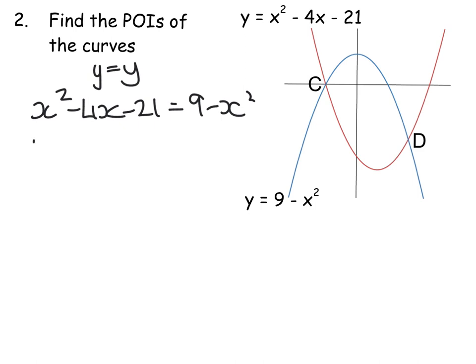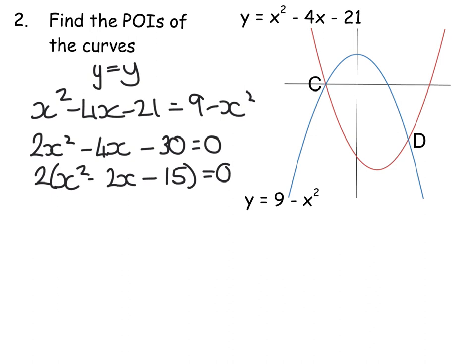And I'm going to bring everything over to the left-hand side. So this will give me 2x squared, because that will turn positive. There is no x term to tidy up, but my numbers will now give me negative 21 take away 9 is negative 30, equals 0. Now, always look for common factors, because it makes your factorising a lot simpler.